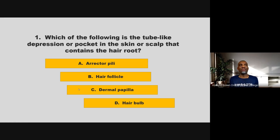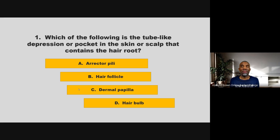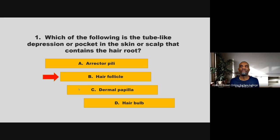Which of the following is the tube-like depression or pocket in the skin or scalp that contains the hair root? Is it the erector pili, the hair follicle, the dermal papilla, or the hair bulb? If you chose B, hair follicle, you are correct.